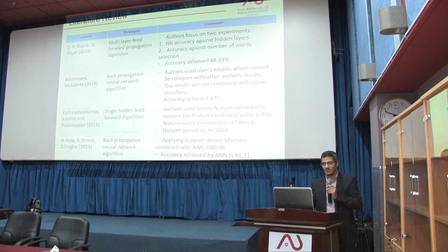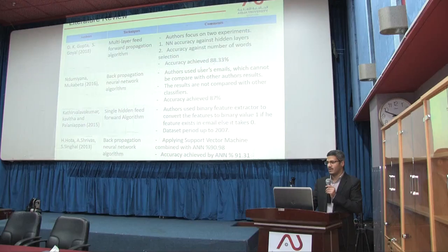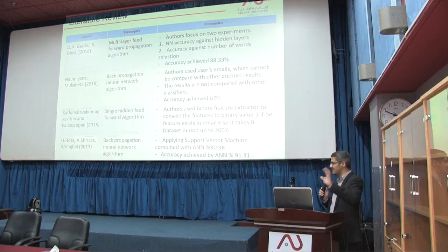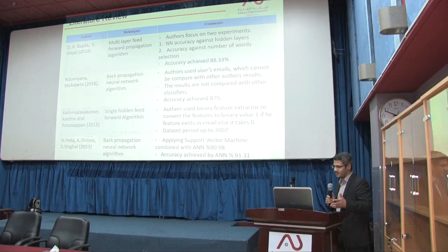We have a model of four research papers. For example, the first one used a multi-layer feedforward propagation algorithm and focused on two experiments: one measuring accuracy against hidden layers, and the other against number of words. The accuracy achieved on that classifier is 88.33. Looking at the accuracy results across papers — 88, 87, 89 — which means the accuracy needs to be improved.